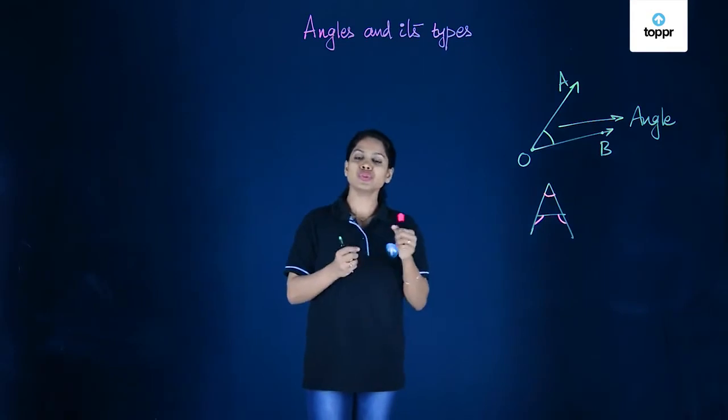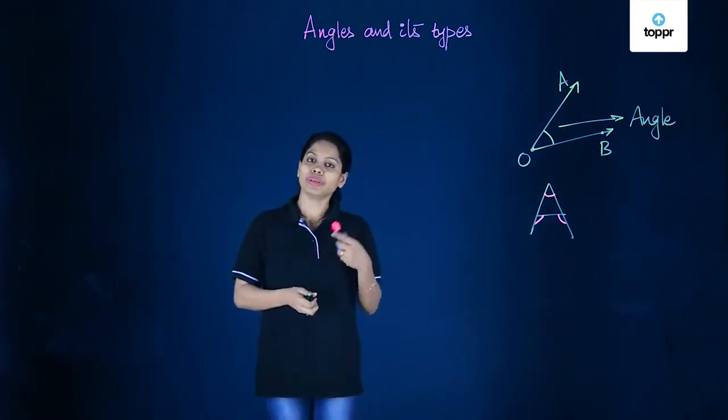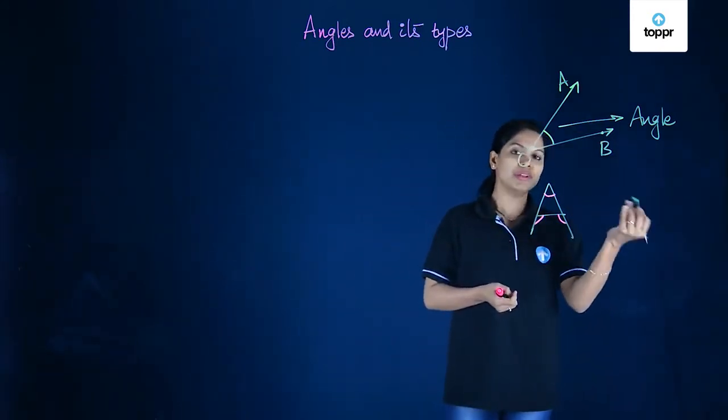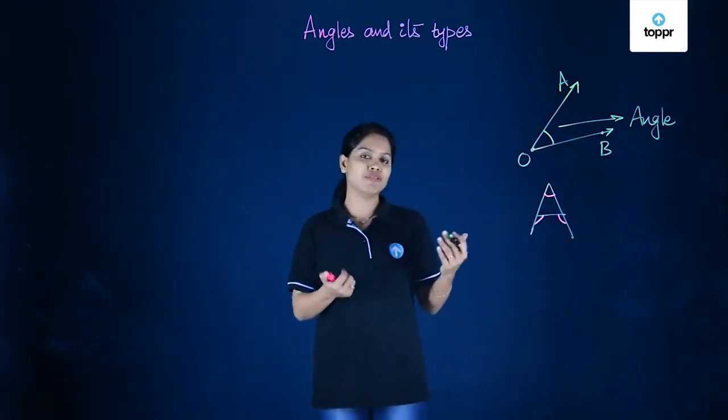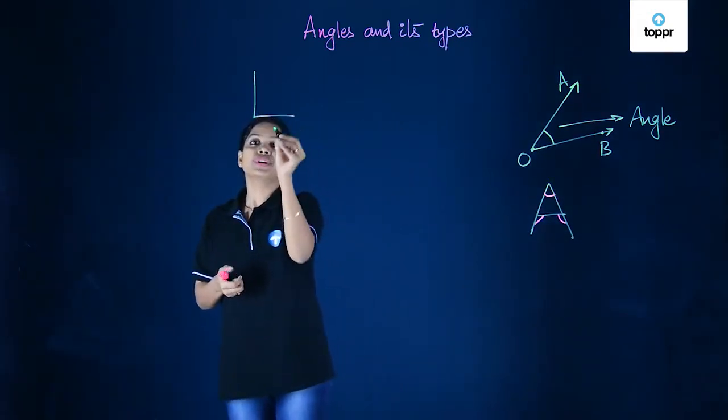But we can also categorize angles into different types. In order to categorize angles, let's look at a few more angles. For example, if we look at the English alphabet L, this here is an angle.